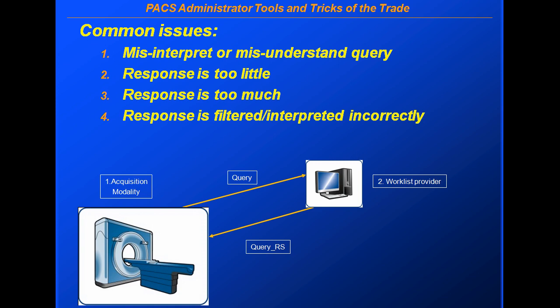Another potential issue would be that the response is too much. Meaning I ask for, let's say, five attributes — the name, the ID, the birth date, sex, modality, and maybe the scheduled station name — but instead, after I ask for those attributes, the database dumps back 20 or 30 attributes and then the modality gets confused.